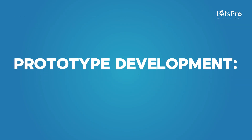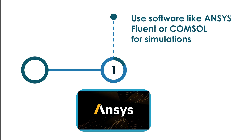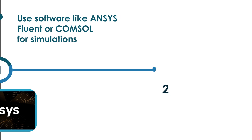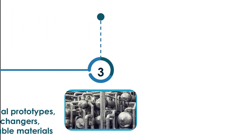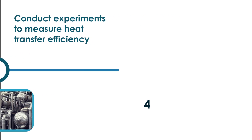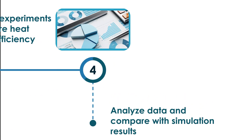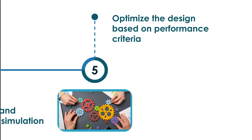For prototype development, use software like ANSYS Fluent or COMSOL for simulations. Build physical prototypes like heat exchangers using available materials. Conduct experiments to measure heat transfer efficiency. Analyze data and compare with simulation results. Optimize the design based on performance criteria.